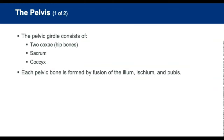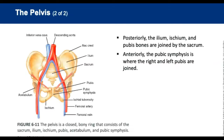The pelvic girdle consists of two large hip bones, the sacrum and the coccyx. Each hip bone is formed and fused from three parts: the ilium, ischium, and pubis. The pubic symphysis is cartilage that joins the left and right pubic bones and limits movement between them.